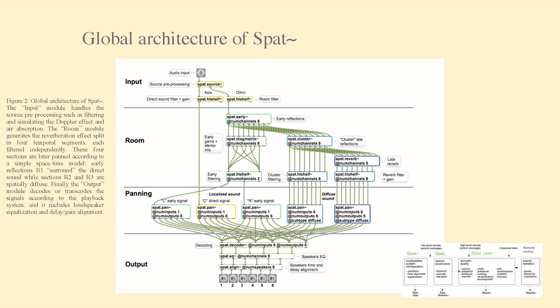Let's take a closer look at the overall architecture of SPAT. The first module is the input module, which is responsible for source processing. This module handles tasks such as filtering the source signal and simulating effects like the Doppler effect or air absorption. The Doppler effect is a change in frequency due to the relative motion between the source and the listener — for example, when a police car passes by, you perceive a change in the frequency of the siren. Air absorption is the attenuation of sound as it travels through air. The input module prepares the source signal for further processing.